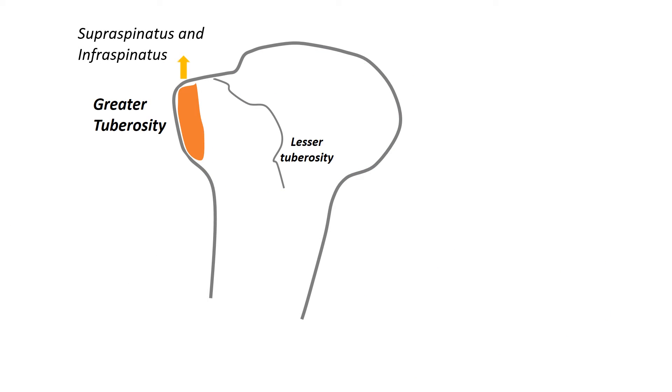Supraspinatus and infraspinatus pull the greater tubercle upwards, while subscapularis pulls the lesser tubercle medially.